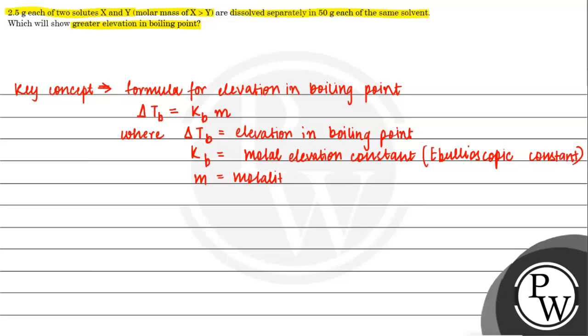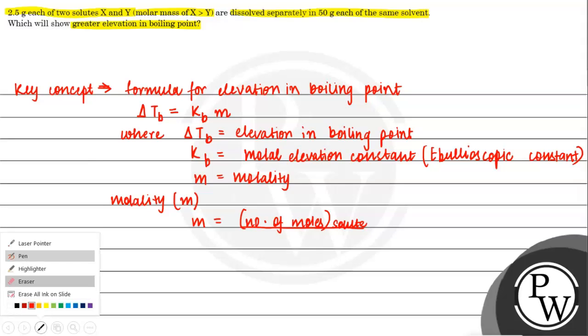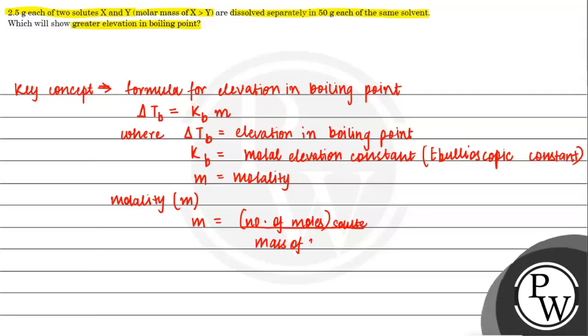Now we can write a formula for better understanding. Molality is represented by small m. M equals number of moles of solute divided by mass of solvent in kilograms.